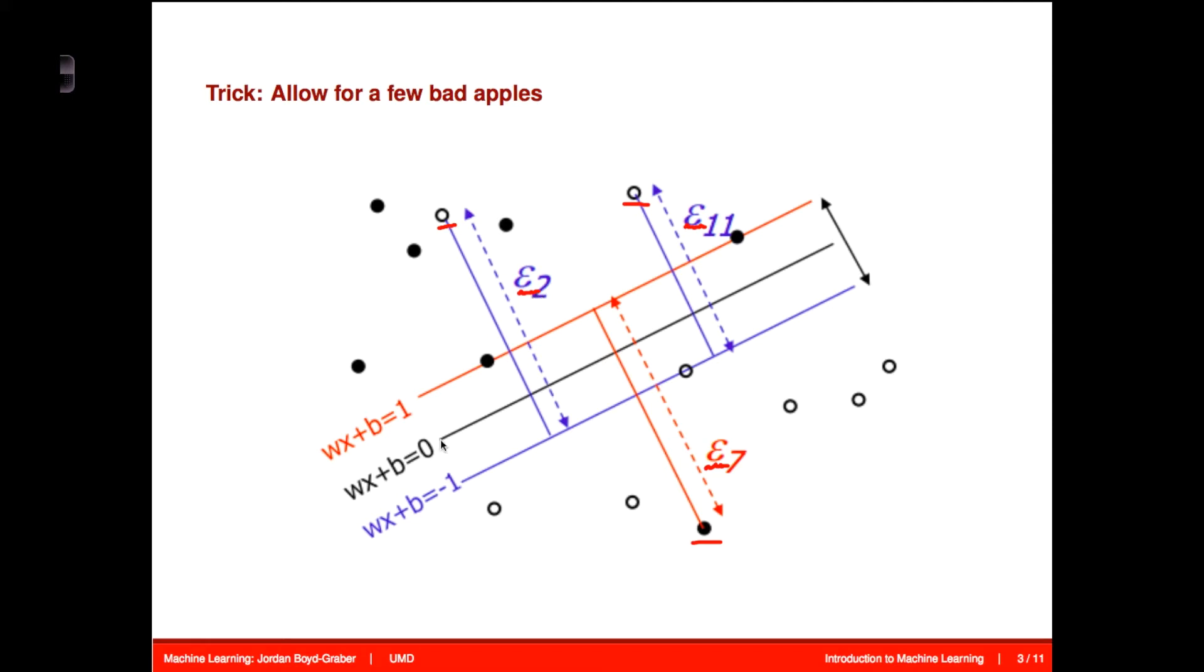Recall that the hyperplane dividing the classes is where you have wx plus b equals zero. So this is the case where the support vector machine gives you no answer—this is the neutral zone. Then you have wx plus b equals one, and these are your support vectors for the positive class. And then you have wx plus b equals negative one—these are the support vectors for the negative class. The bad apples lie on the wrong side.